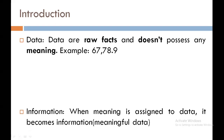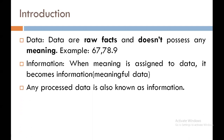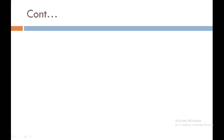The next term is information. When any meaning is assigned to data, it becomes information. In short, meaningful data is called information. Any processed data is also known as information. For example, total number of marks, enrollment number, roll number, student name — these all have some meaning, so they are called information.